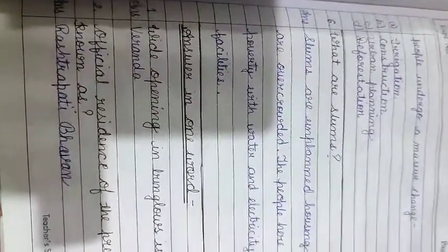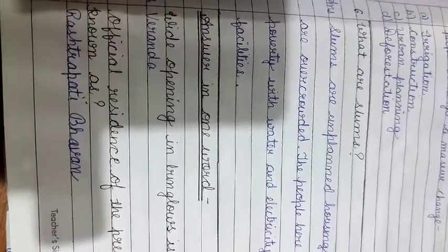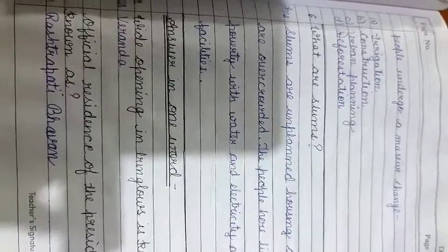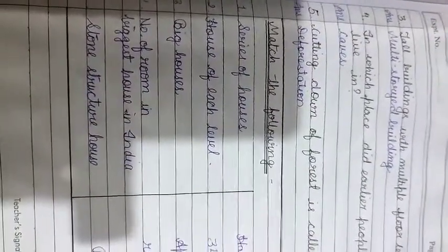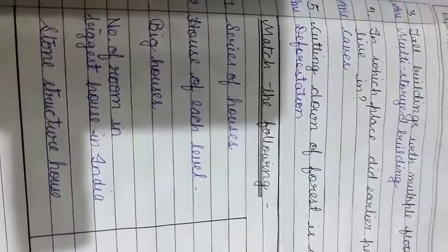Now students, we discuss one-word answers. The wide opening in bungalows is known as a veranda. The official residence of the President of India is known as Rashtrapati Bhavan. Tall buildings with multi-floor levels are called multi-storied buildings — M-U-L-T-I S-T-O-R-E-Y-E-D buildings. The place where earlier people used to live was in caves.